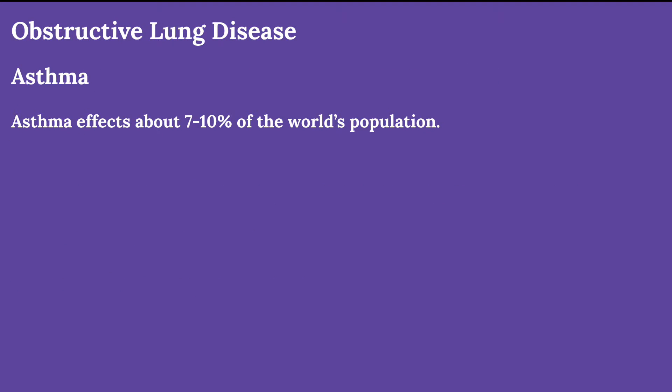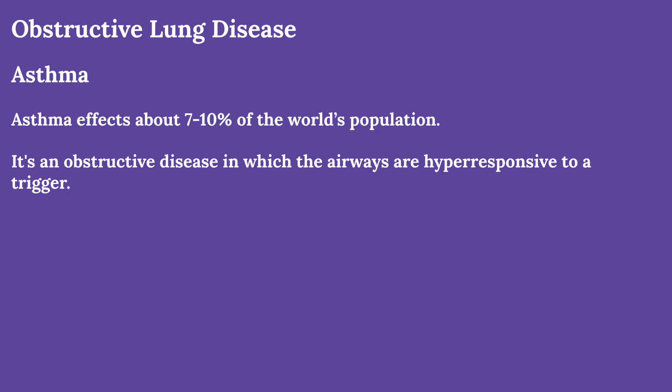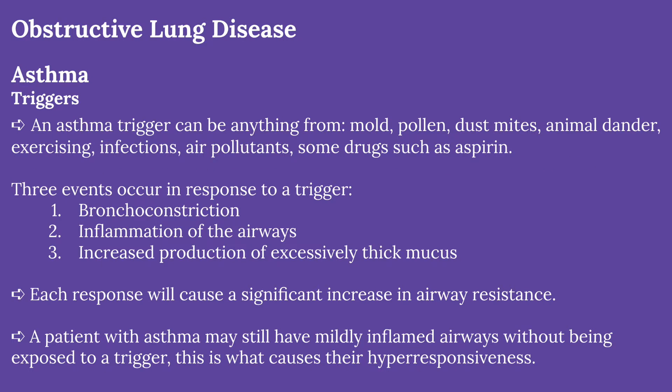Asthma, another obstructive lung disease, affects 7 to 10 percent of the world's population. In asthma, the airways become hyper-responsive to a trigger, which can be anything such as mold, pollen, dust mites, exercising, infections, air pollutants, or drugs like aspirin. As a result of trigger exposure, three events occur: first, the airway of the lungs will constrict; then the airways will become inflamed; and lastly, an excessive amount of mucus will be secreted. Each of these responses causes resistance in the airways. In some cases, a patient may still have mildly inflamed airways even without trigger exposure.